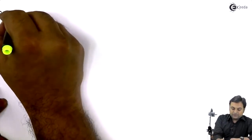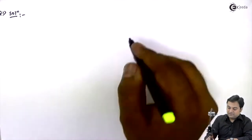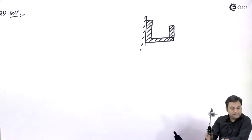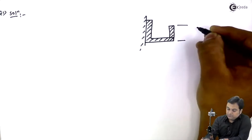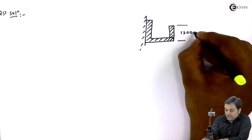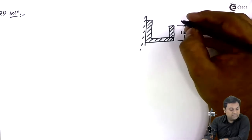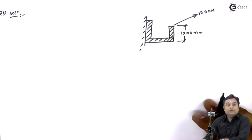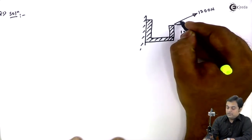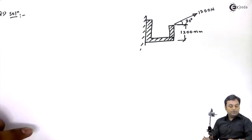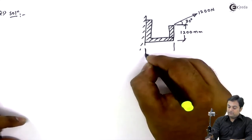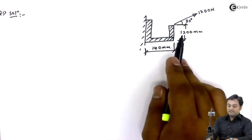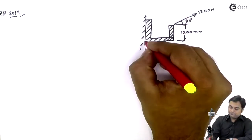For the solution, I'll draw the diagram of the bracket. The vertical portion has a height of 1200 mm, and on it we have a load of 1200 Newton inclined at 30 degrees. The horizontal length of the bracket is 140 mm, and the bracket is attached to the wall at point A.